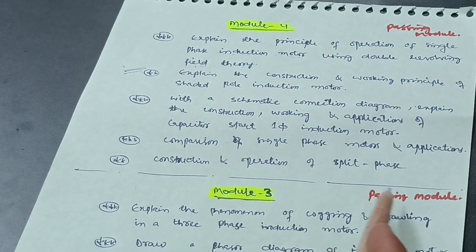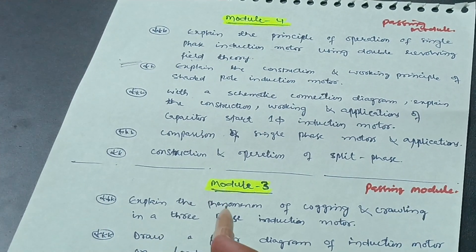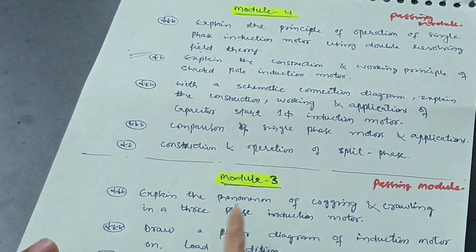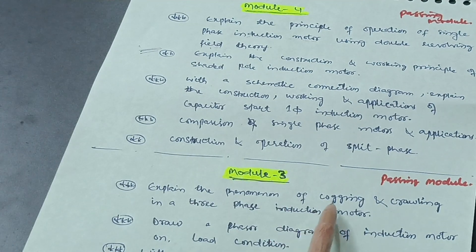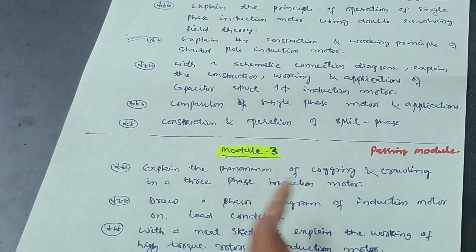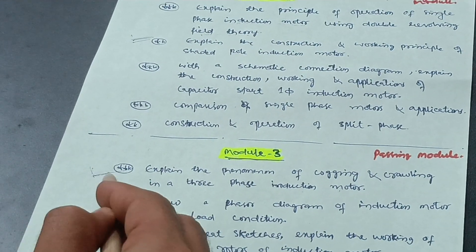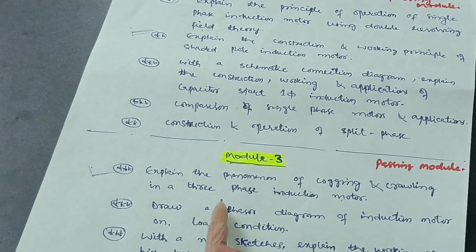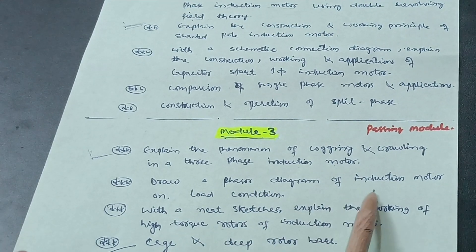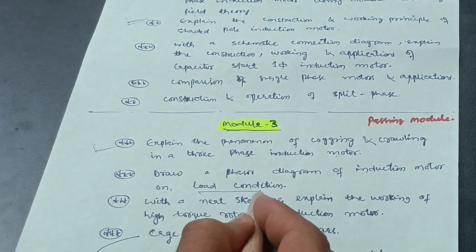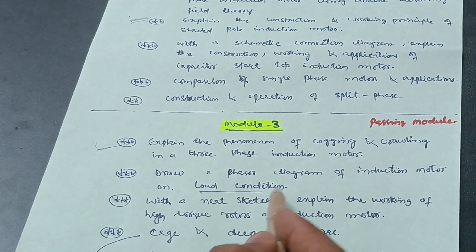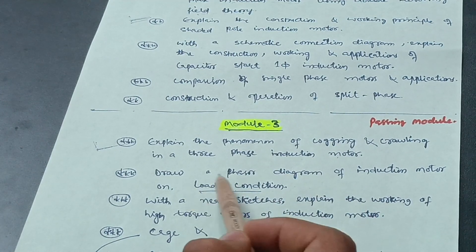Module three is the third passing module. The first important question is: explain the phenomena of cogging and crawling in a three-phase induction motor — this was asked in every examination under the 2018 scheme. Then, draw a phasor diagram of an induction motor on load condition. Sometimes they may also ask for the phasor diagram on no-load condition.